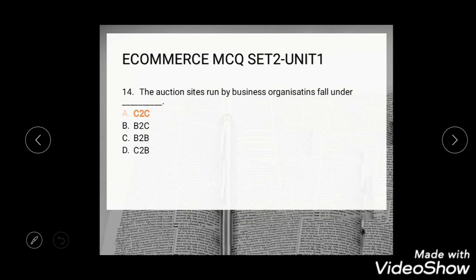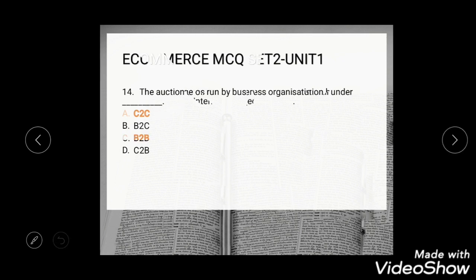Question 13: Auction sites run by business organizations fall under dash. Options are C2C, B2B, B2C, and C2B. The correct answer is C2C — customer to customer.